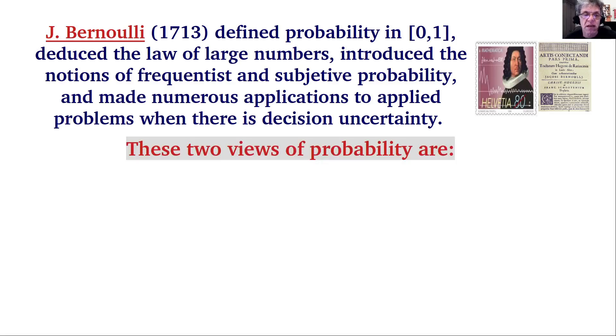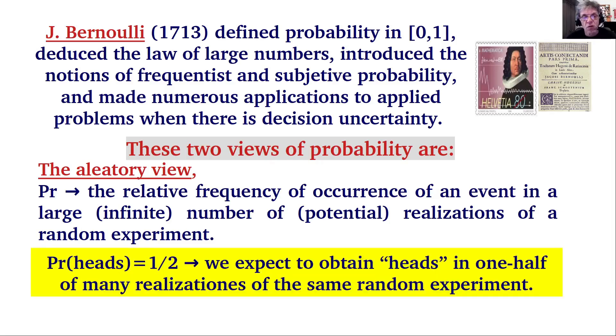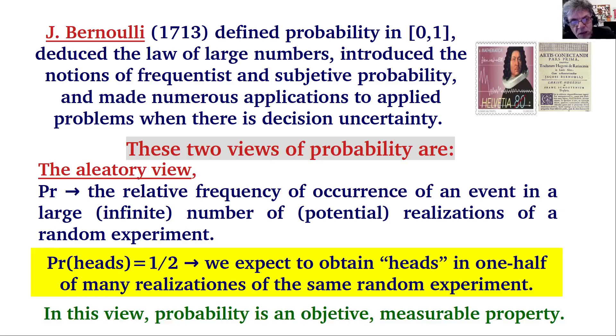These two views of probability are the following. The first is the aleatory view. Here probability is the relative frequency of occurrence of an event in a large, potentially infinite number of potential realizations of a random experiment. A random experiment is an experiment whose outcome we cannot predict with precision before observing the result, the simplest of which is tossing a coin. We cannot forecast in advance which side the coin will land. When I say the probability of heads is one half, we expect to obtain heads in about, not exactly, but about one half of many realizations of the same random experiment. In this view, probability is an objective measurable property of the real world.